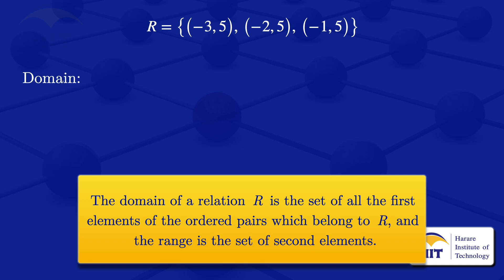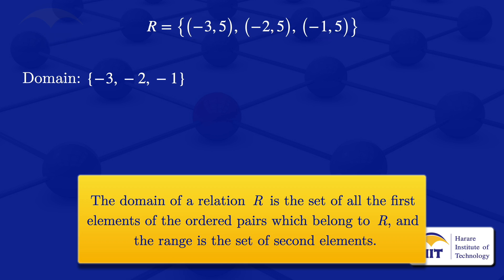Using that definition, we can look at the domain. For the domain, we look at the first elements in the ordered pairs in that relation. The first elements are -3, then -2, then -1. Therefore, the domain of that relation is {-3, -2, -1}, the set of all the first elements of the ordered pairs of the given relation.